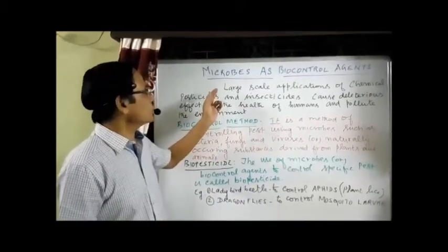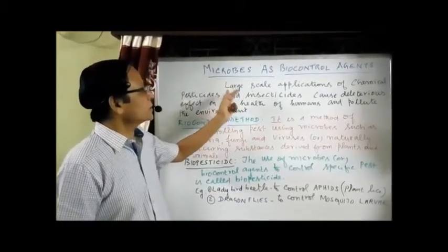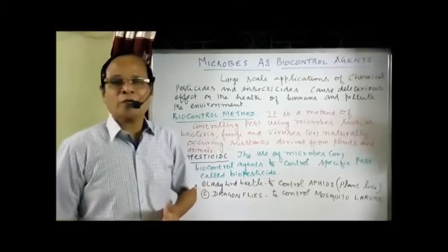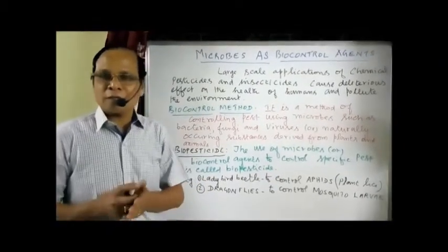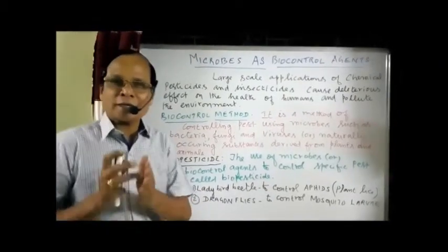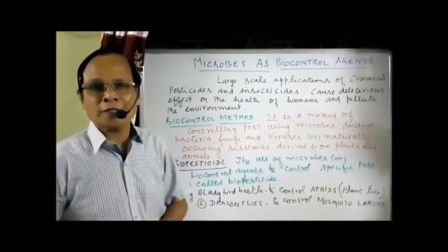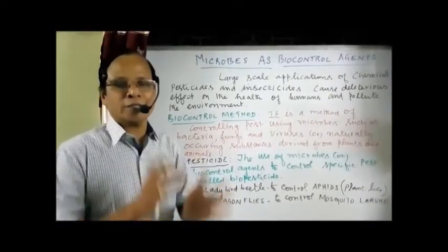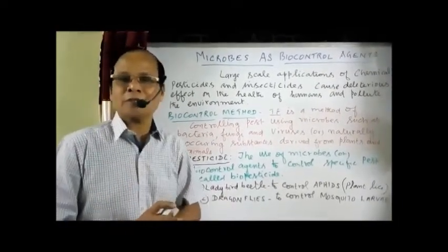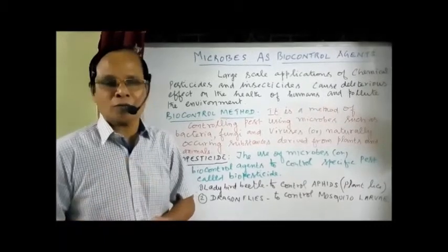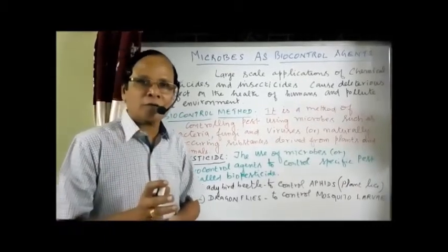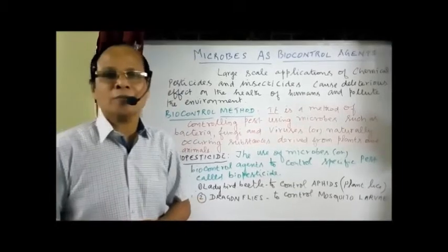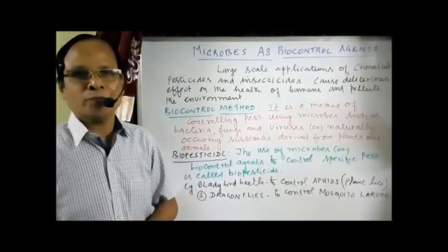Now we have to talk about microbes as biocontrol agents. What is biocontrol? It is nothing but eradicating harmful living organisms with the help of another living organism. That method is called biocontrol. Killing harmful living organisms with the help of another living organism — that is called the biocontrol method.